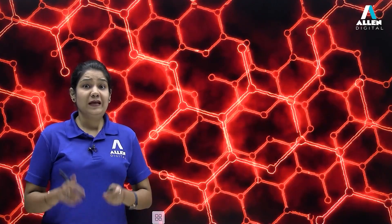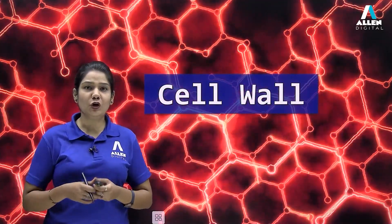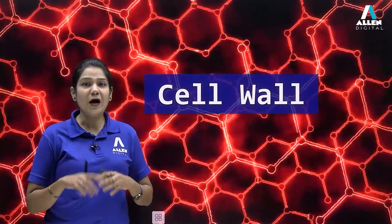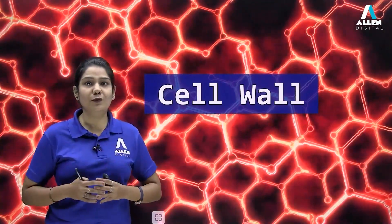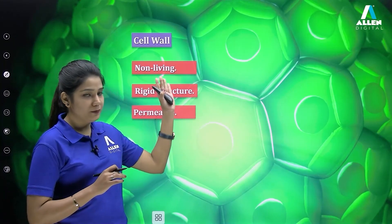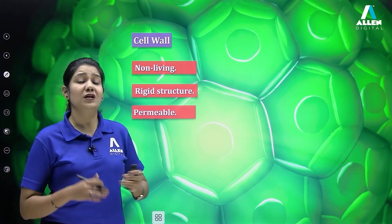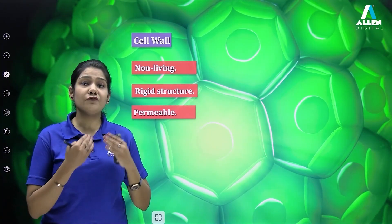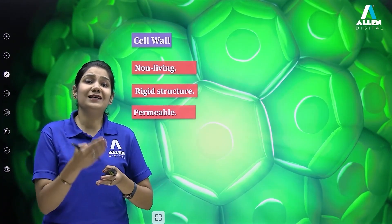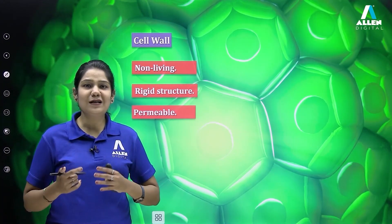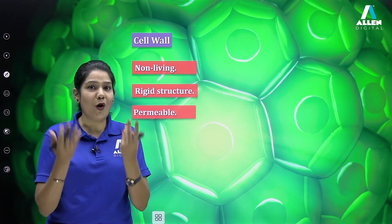Hello dear students, welcome to this lecture. We are going to learn about the cell wall, one of the important outermost coverings found in certain organisms which protects their body. Starting with its characteristic features: it is non-living, it is a rigid structure, and it is permeable. The cell wall is permeable because inner to it is the plasma membrane, which keeps check of what goes into or out of the cell.